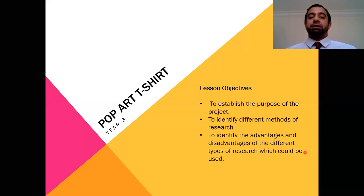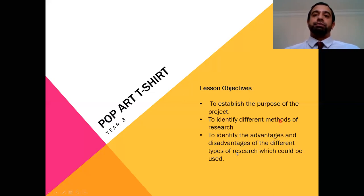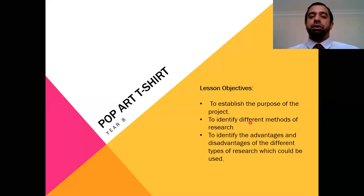Let's look at what today's lesson is going to involve — the learning objectives. We're going to establish the purpose of the project, which I've given you a quick brief about: using pop art inspiration to create a t-shirt design. You're going to identify different methods of research and identify the advantages and disadvantages of different types of research. These two points are very important, because you need to understand the pop art movement before you can create a t-shirt design. If you don't know what the pop art movement is, how are you going to create a design based on it? So this research method is very important and that is the task of today.